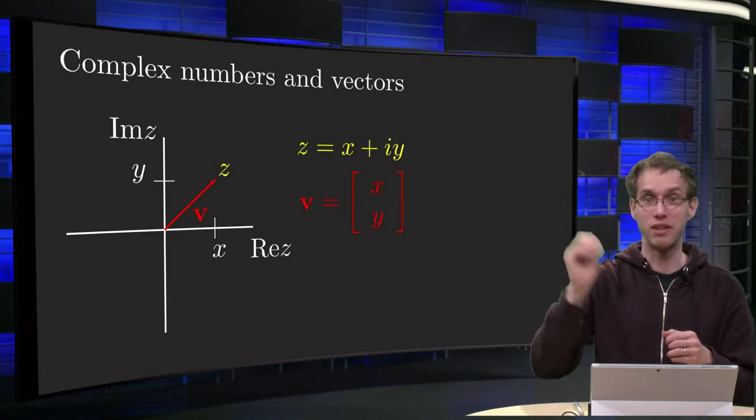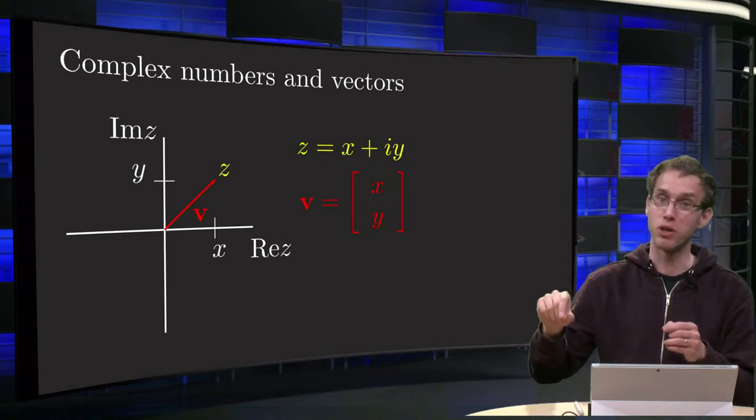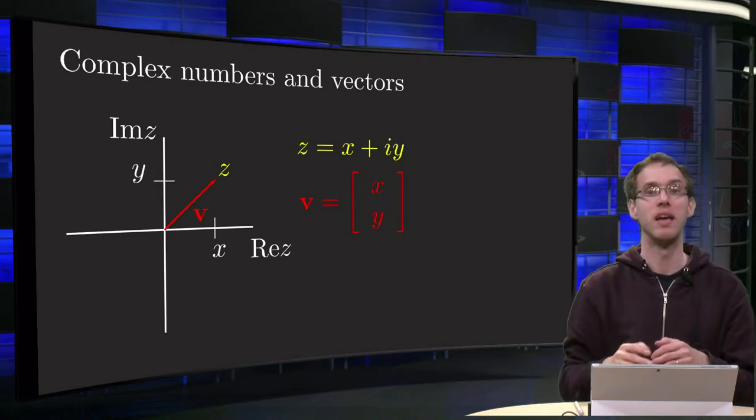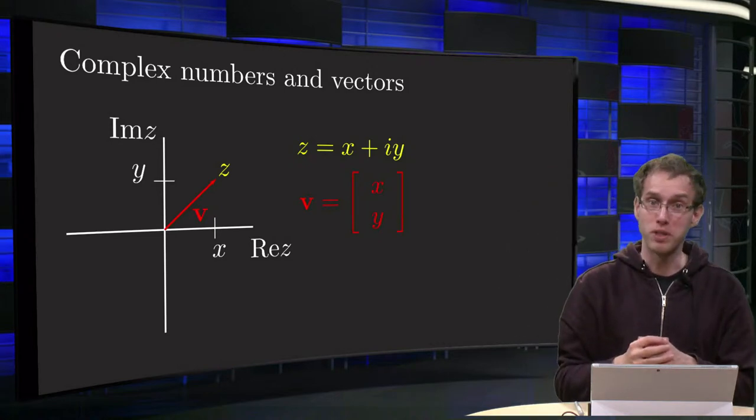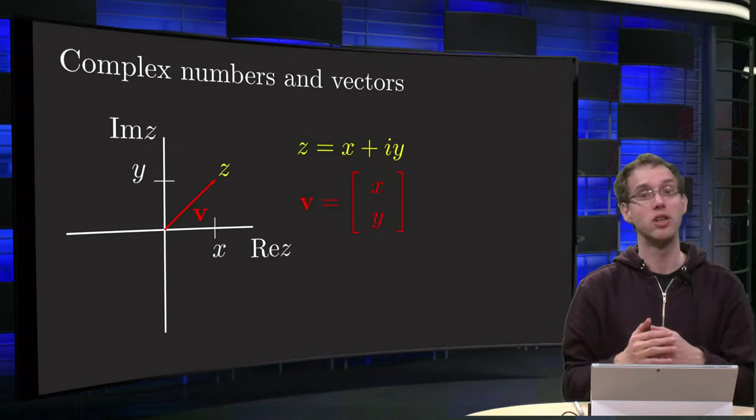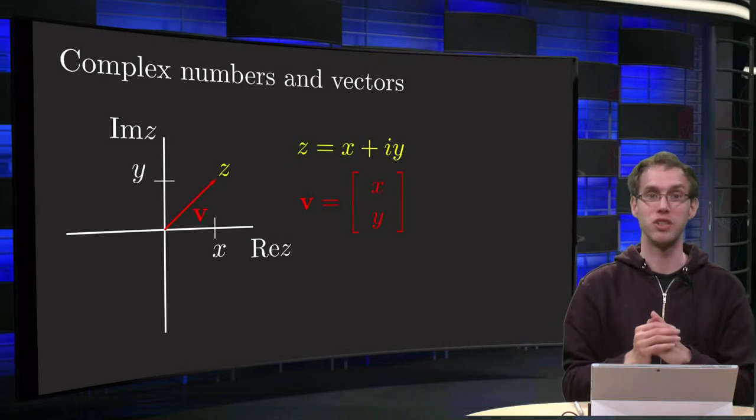We can view complex numbers as a vector from the origin to the point. This is useful if we want to apply geometric properties, which we know from vectors, to complex numbers, as you will see in this video.